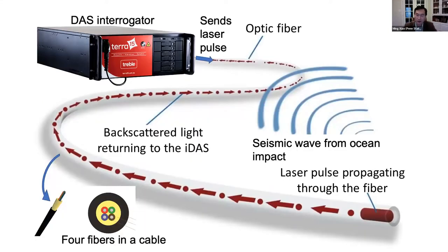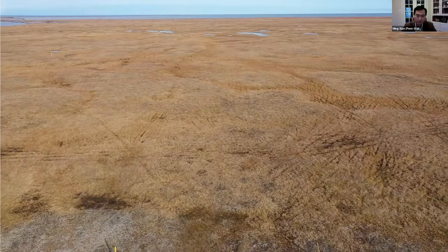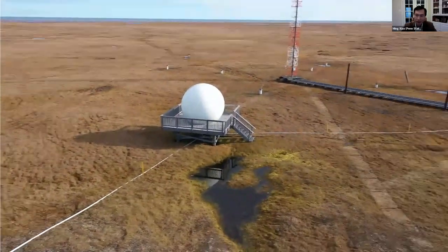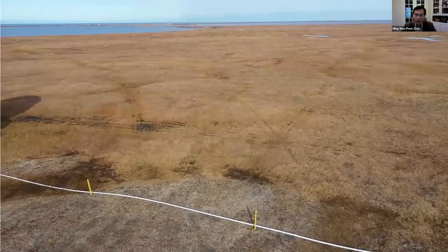As Scott mentioned earlier about the functionality of DTS, we couple DTS with acoustic sensing, or DAS — and DTS functions similarly to DAS. We installed the DTS and DAS cables in the tundra of Utqiaġvik, as shown on the Google map. We started at the DOE ARM facility, went along the service road, around the NOAA building, extended into the tundra, and ended close to the Elson Lagoon, which is connected with the Arctic Ocean. The cable is about two kilometers long.